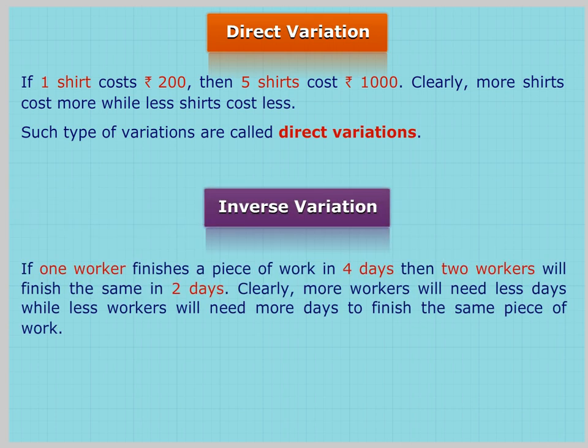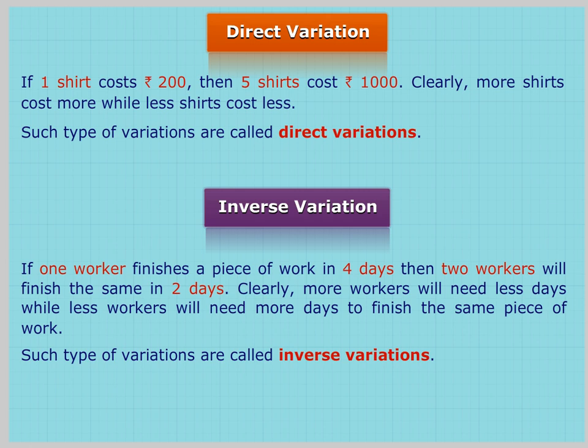Inverse Variation: If one worker finishes a piece of work in four days, then two workers will finish the same in two days. Clearly, more workers will need less days, while less workers will need more days to finish the same piece of work. Such types of variations are called Inverse Variations.